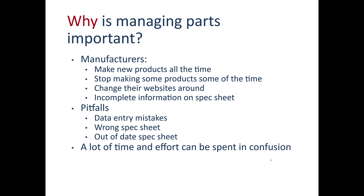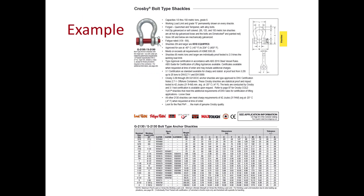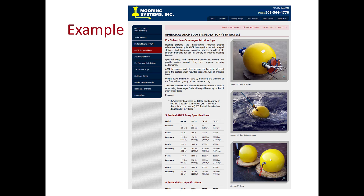You certainly don't want to find out there was a problem through a mooring failure. This is a pretty typical spec sheet — this one is for a Crosby galvanized shackle — and you can see there's a lot of information across different shackle sizes: dimensions, inside length, weight, stock numbers, and so on. There's a lot of information and there isn't a standardized format for these spec sheets, so every manufacturer's sheet looks a little different. Here's an example from the Mooring Systems website for float sizes — a lot of useful information, but not everything you need.